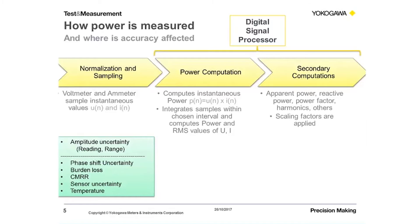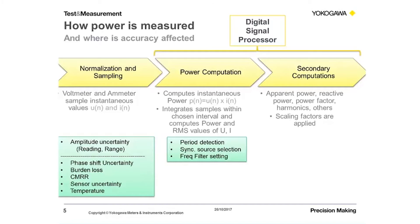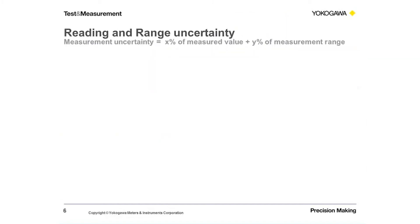In the normalization and sampling circuit, most of the amplitude uncertainty exists. There's also internal phase shift uncertainty, one has to account for burning loss, common mode rejection ratio can influence the measurement, sensors applied are outside but we place them inside this box, and of course temperature plays a big role. Does amplitude uncertainty include voltage, current, and power? How exactly is the uncertainty of that expressed?